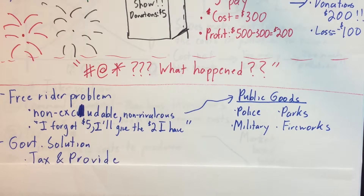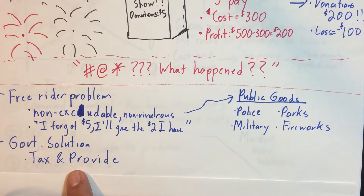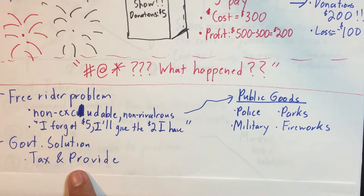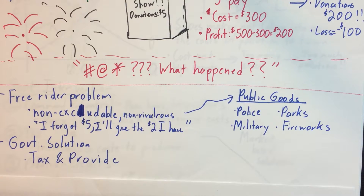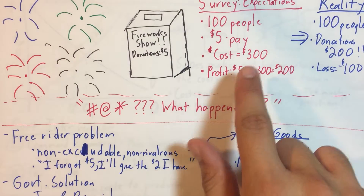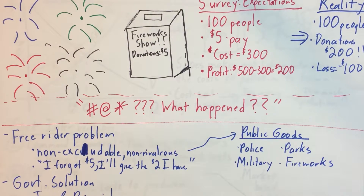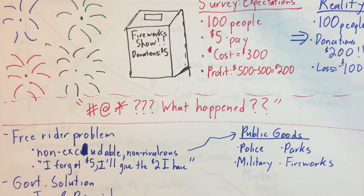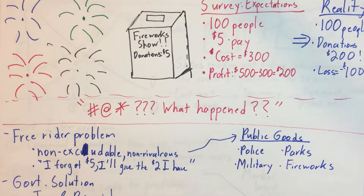How do we solve this? The typical government solution is to tax and provide these goods. That's what happens with police, military, parks, and fireworks — the government takes up five dollars from everyone, buys the fireworks, and everybody gets the fireworks show they want while the producers cover their costs.